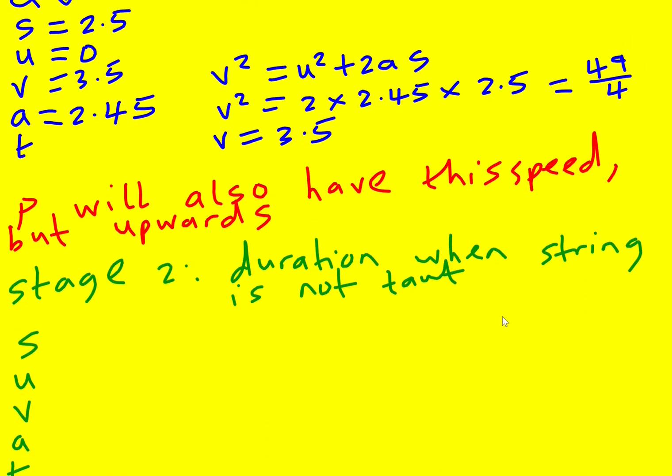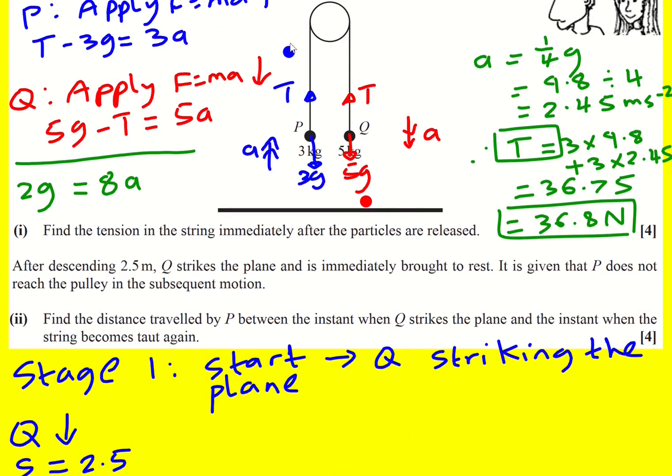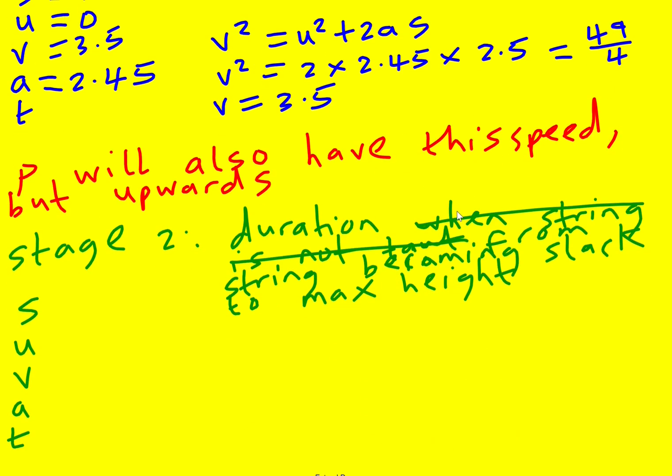So actually, I need to change this to duration from string becoming slack to the max height. So if I can work out the distance that it's traveled from here to the max height, I can then just double it because it's going to come back down. And like I said, it's going to be in that exact same place that causes this system to become taut again, the string to become taut.